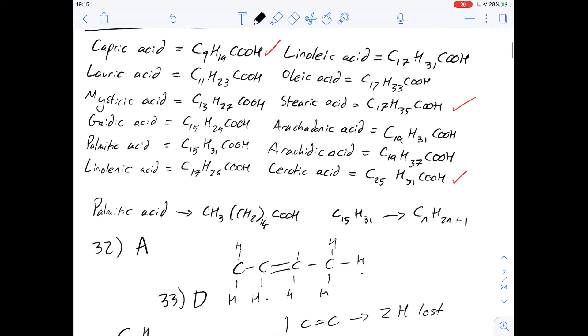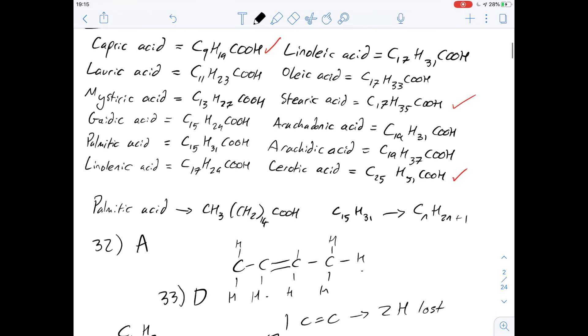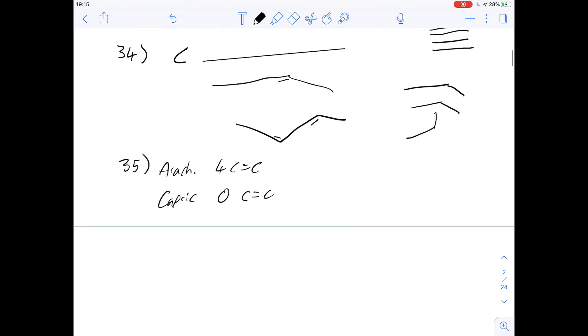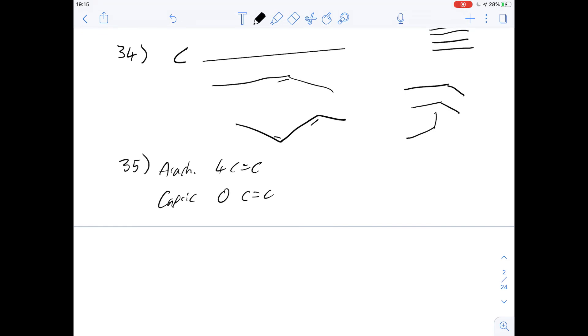And what about gaidic acid? Well, if we look at our list here we can see that it is C15H29, and so it's missing two hydrogens, which means there's one carbon-carbon double bond there. So we say gaidic is one carbon-carbon double bond. So the order will be arachidonic, then gaidic, then capric acid, and that corresponds then to answer D. So the answer for number 35 is going to be D.